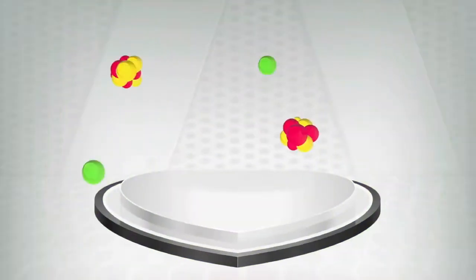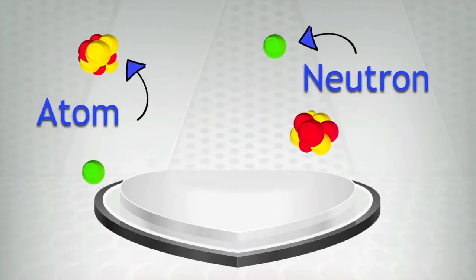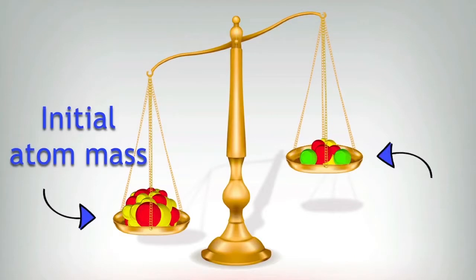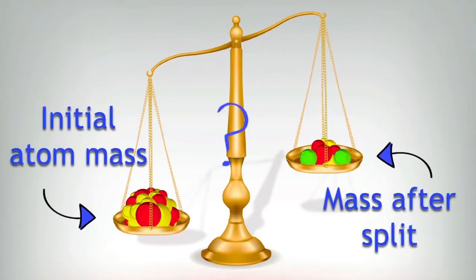They split into smaller atoms and a number of neutrons. If we measure the mass of the initial atom and the total mass of the products after the split, there seems to be a discrepancy. Some mass seems to be lost.